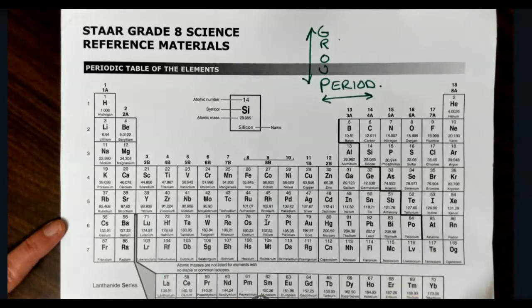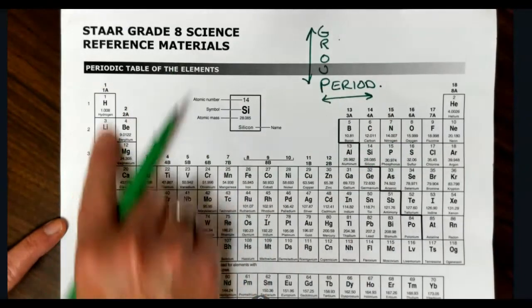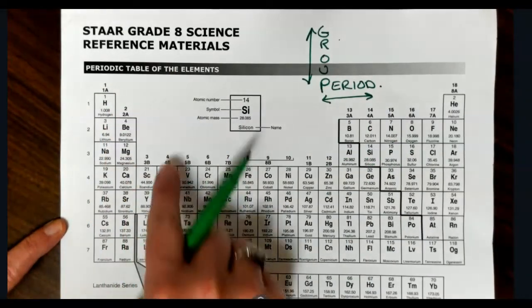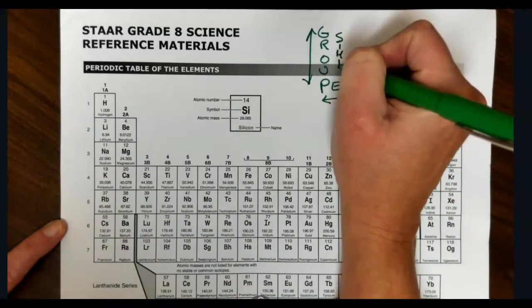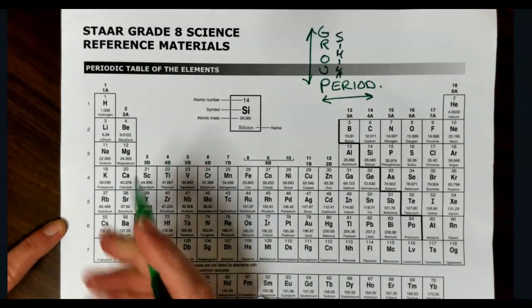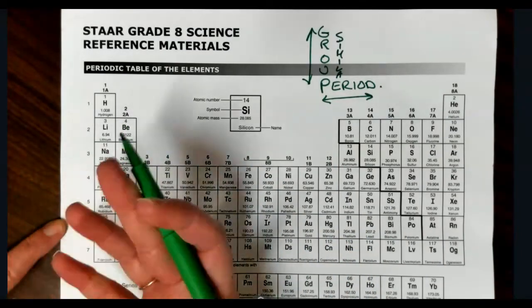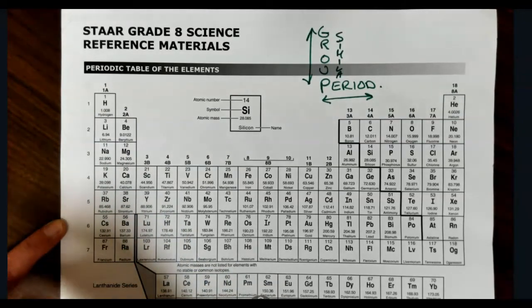Now there are some things that we need to remember about the groups and periods. So remember, when we talk about the groups, anything in the same group is going to be similar. So these are similar. How are they similar? They're similar because they have similar properties, chemical reactivity and other properties. Not identical, but they behave in a similar way.